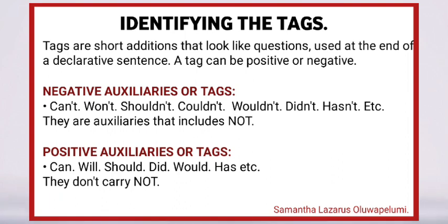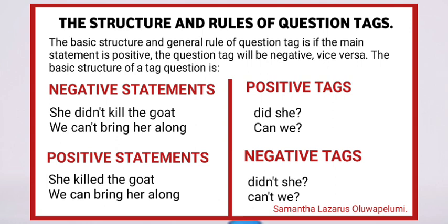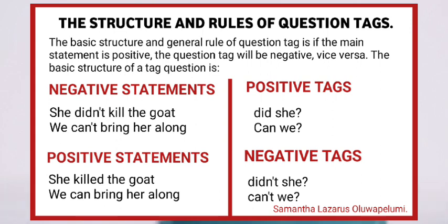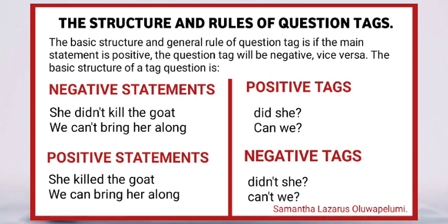They don't carry 'not.' They don't have the word 'not' or 'n apostrophe t' attached to them. The structure and rules of question tags: the basic structure and general rule is — if the main statement is positive, the question tag will be negative. And if the main statement is negative, the question tag will be positive.